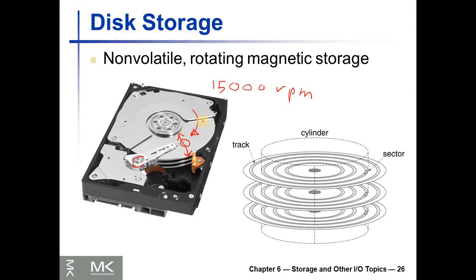The data is stored in circles. Each circle is called a track, and the six tracks that have the same radius are called a cylinder.